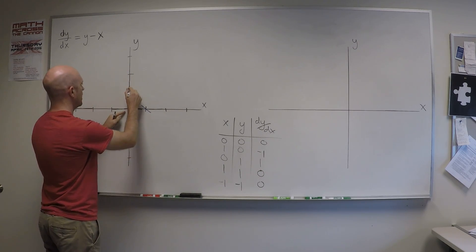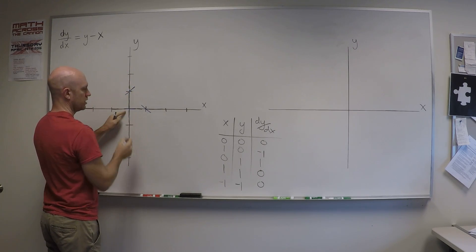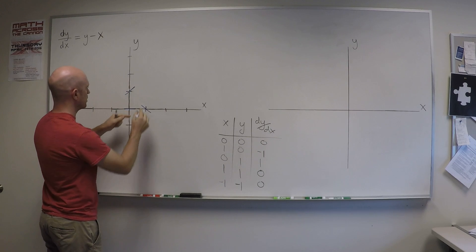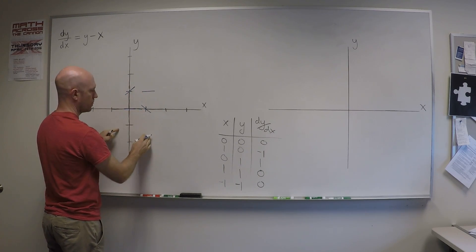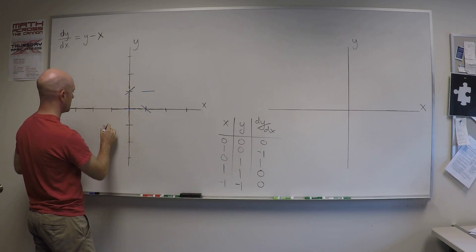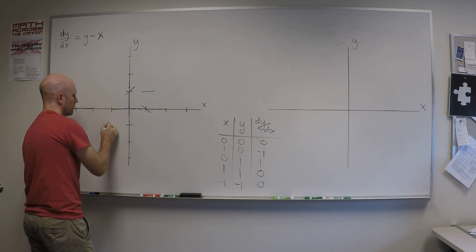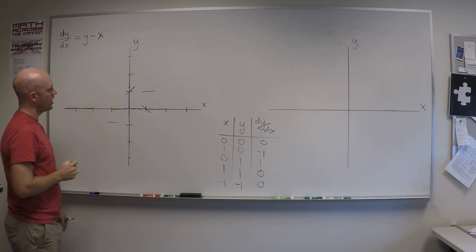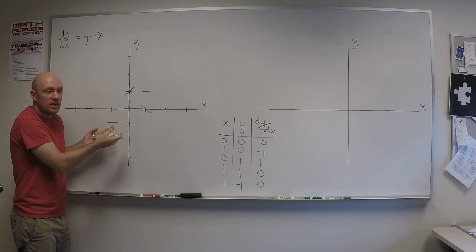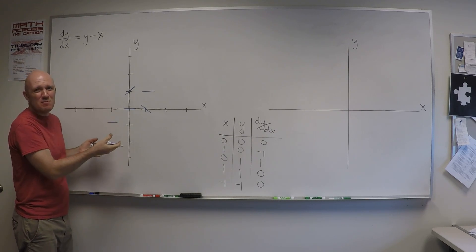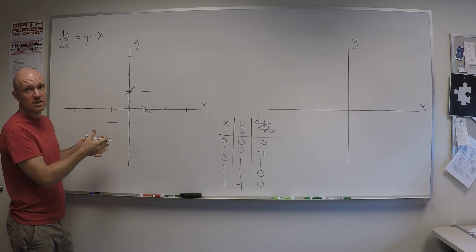Let's just fill those in real quick. 0, 1, I go up here, I get a slope of 1. 1, 1, I get a slope of 0. Minus 1, minus 1, I get a slope of 0. Okay, great. You can see I can go on with this all day long, but it's going to take me a little while. So let me show you a faster way of doing this.